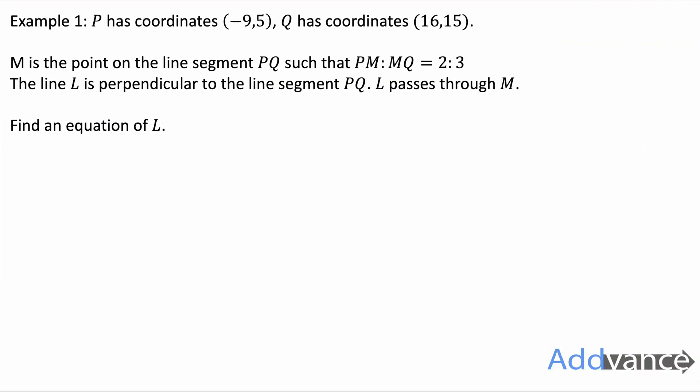It says P has the coordinates (-9, 5) and Q has the coordinates (16, 15). M is the point on line segment PQ such that PM:MQ is 2:3. The line L is perpendicular to the line segment PQ. L passes through M. Find an equation of L.